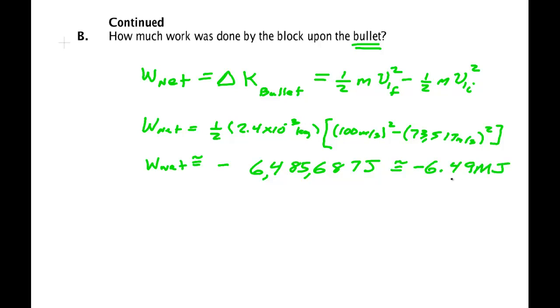Now if that occurred in one second, that'd be like 6.49 megawatts. To give you an idea, a nuclear power plant is between 50 and 80 megawatts. But this thing didn't occur in one second, this probably occurred in a millisecond, which means this is more like a gigawatt.